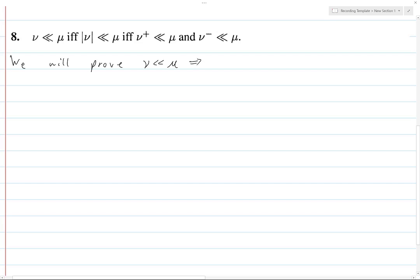We'll prove ν is absolutely continuous with respect to μ implies ν⁺ and ν⁻ are, implies the total variation of ν is, implies that just ν is. Because this will give us implications in all directions. Basically, all three of these are equivalent.